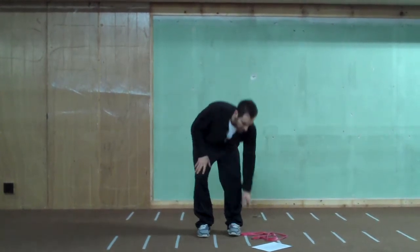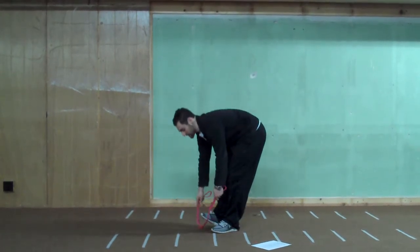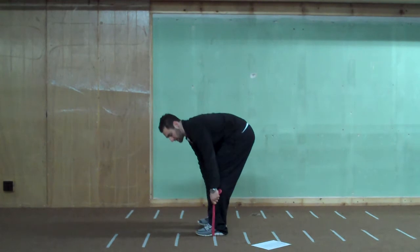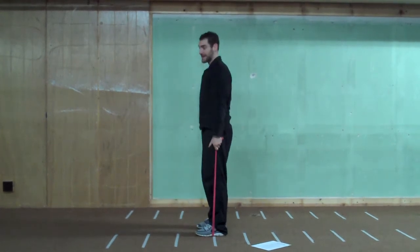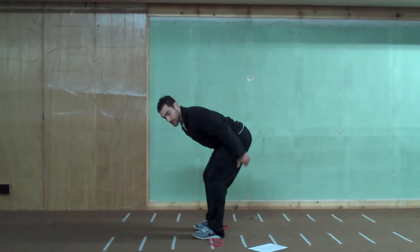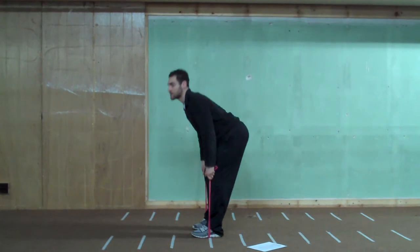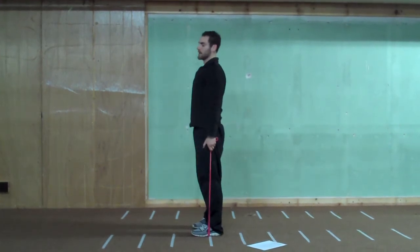Then you're going to go into RDLs for movement number two of round two. Same position as you had it for rows, feet hip width apart. Now we're going to stand up. So you're going to push your hips back. You want to feel a stretch in your hamstrings. You want to load your hamstrings, pushing your hips back, come all the way up. Again, push your hips back, coming all the way up.